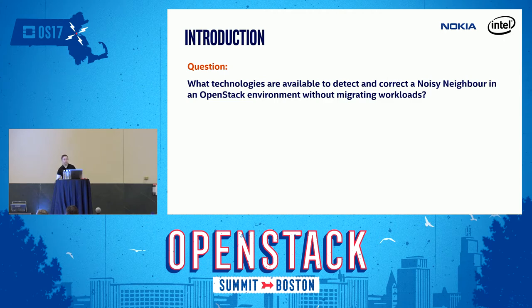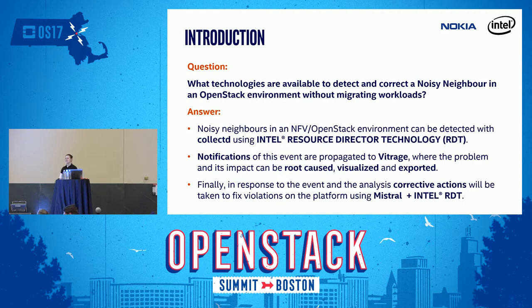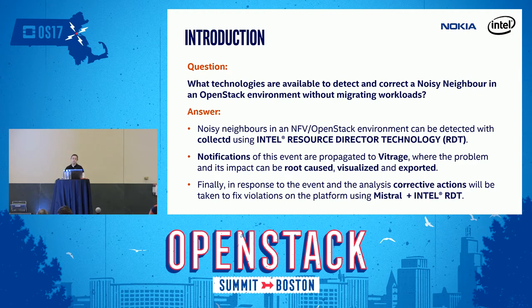The question we're trying to answer is: in an OpenStack environment, how can we detect and correct a noisy neighbor without migrating a workload from the compute node where it is in operation? The answer is a three-parter. From a detection perspective, we're going to leverage CollectD, which is a system statistics collection daemon, and Intel Resource Director Technology, or RDT. Intel RDT is a set of technologies that allows you to monitor and manage shared resources on the platform like last level cache or memory utilization for applications sharing the same socket. Using a combination of these, we're going to detect a noisy neighbor running on a compute node.